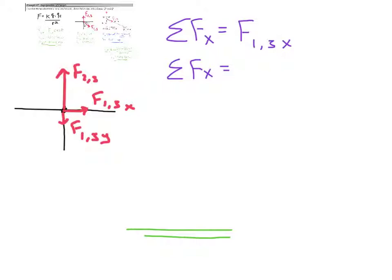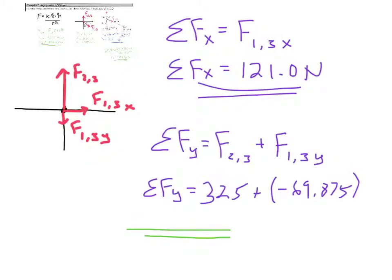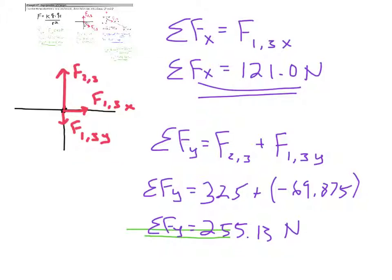The only force acting in the x-direction is the x-component of force one on three: 121 newtons to the right. In the y-direction, we have force two on three and the y-component of force one on three, which is downward and thus negative. The net force in the y-direction ends up being 255.13 newtons directed upward.